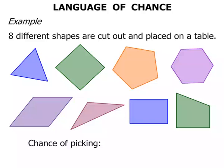What's the chance of picking an oval? Hmm, do you see any ovals there? No, I didn't think so. So in this case, it's impossible to pick an oval. It definitely won't happen.